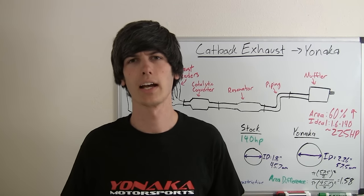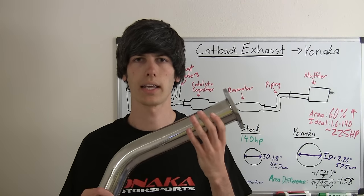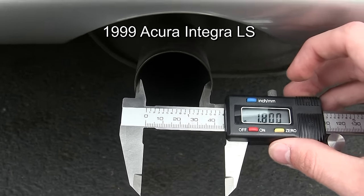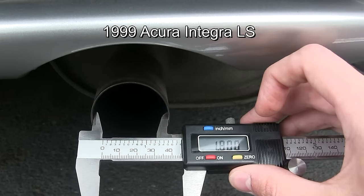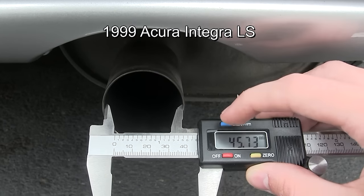So now let's check out the stock diameter piping versus the Yonaka cat-back piping. The current exhaust looks to be about exactly 1.8 inches for the inner diameter of the exhaust, or 45.73 millimeters.